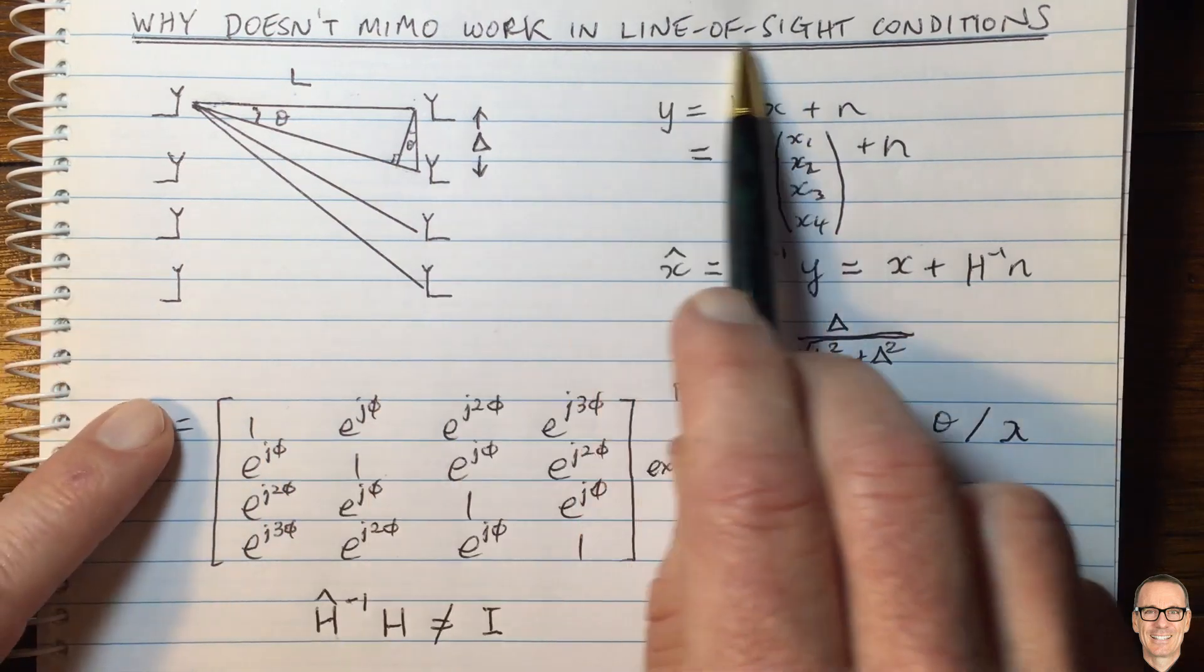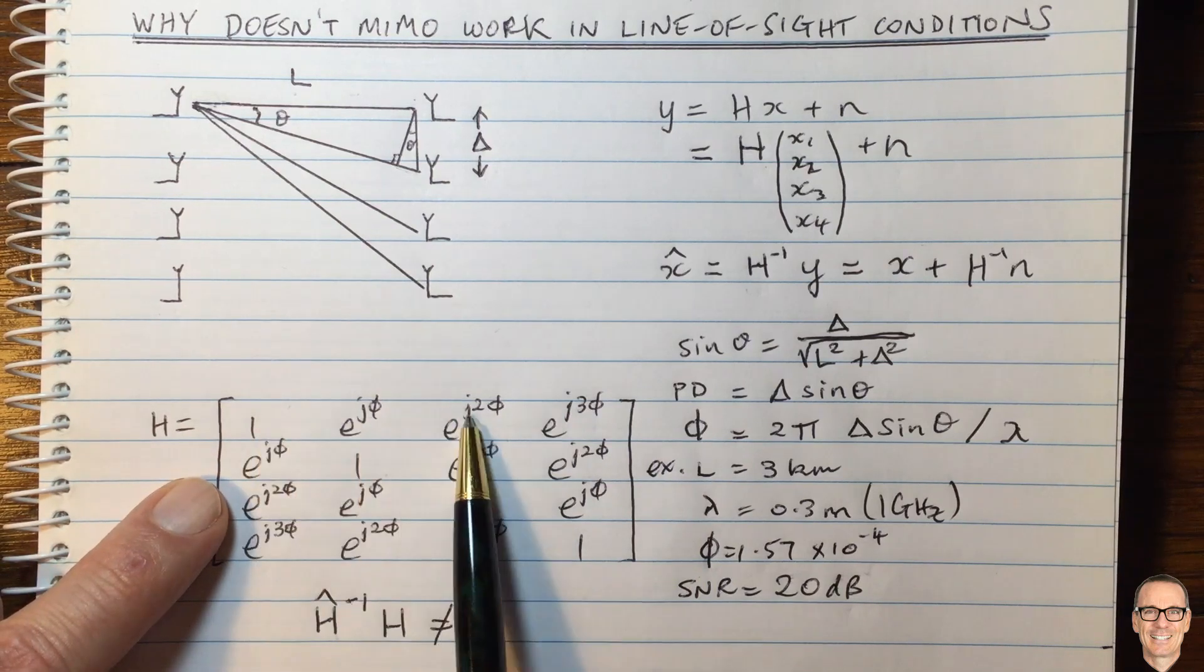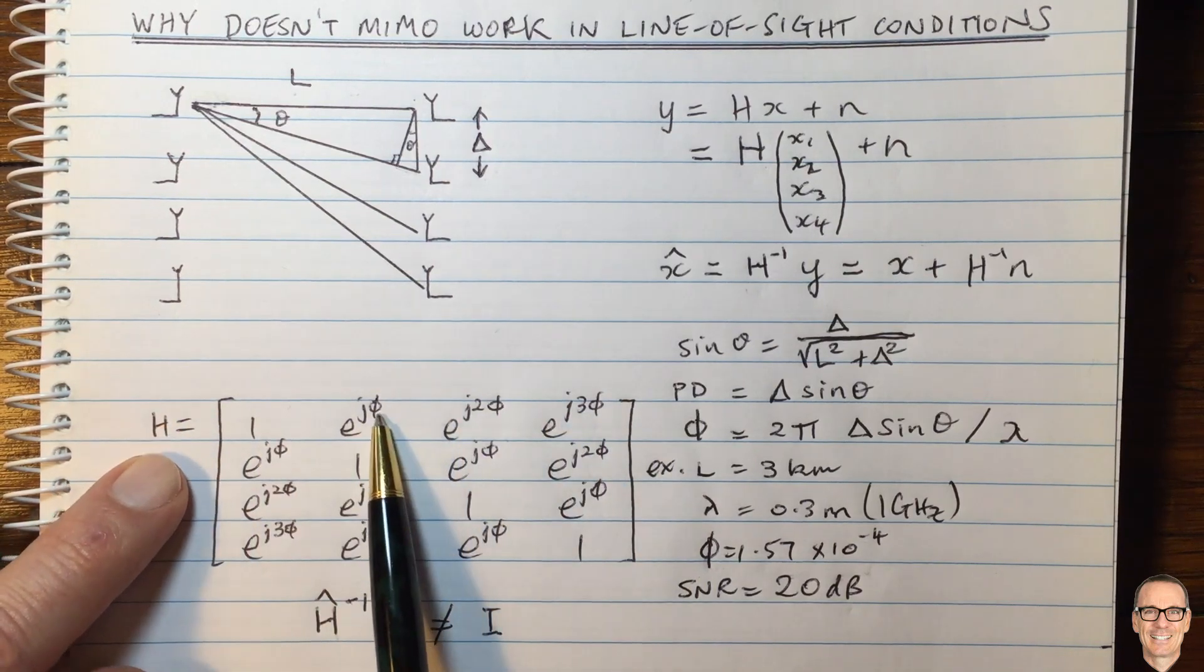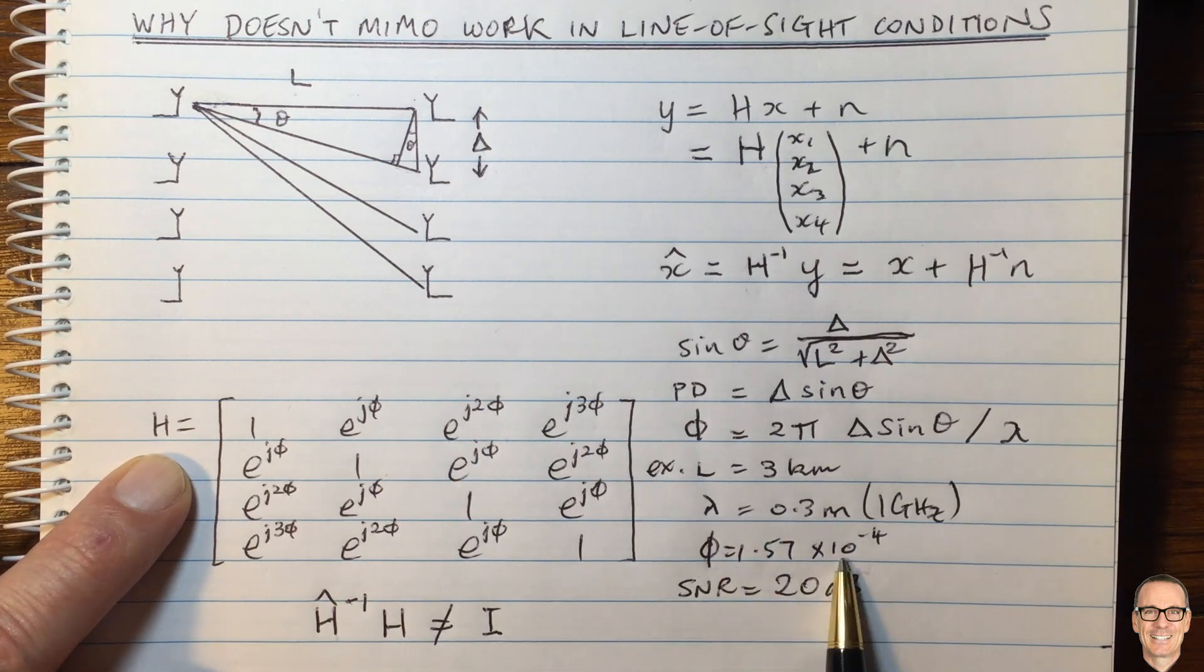But when you have just a line of sight, you have this structure here, the only difference between all of the elements is these small phase changes. And so they are very susceptible to the errors in their estimates.